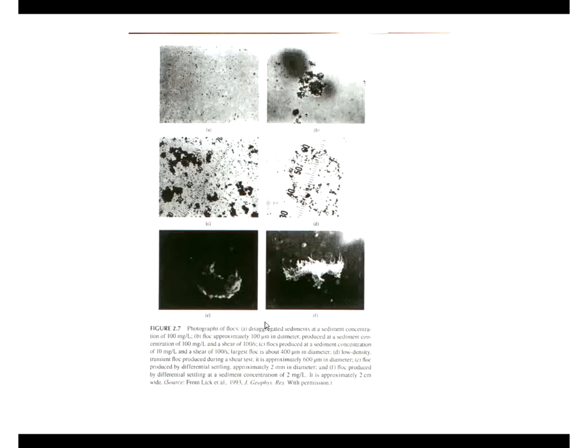I want to show you some pictures of these flocks. On the upper left here are the disaggregated particles. We took some sediments, put them in a kitchen blender, put it up to high speed, and broke them apart into their individual particles. That's a photograph of what we see. The particles — 90% are between 1 and 10 microns in size, and the average particle size is about 4 microns.